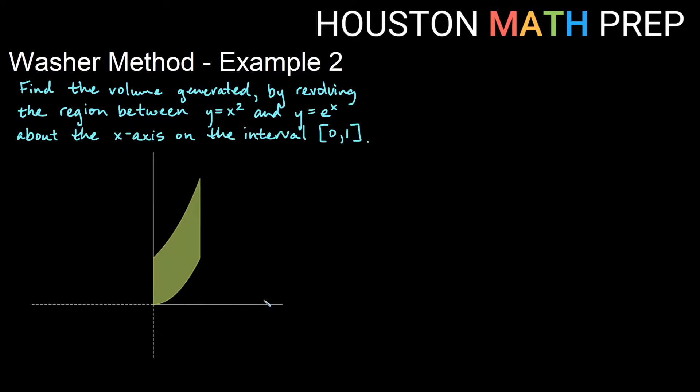Welcome back everyone. This is our second example of using the washer method to find a volume by revolving a region about an axis.